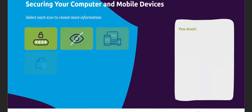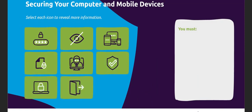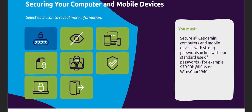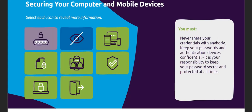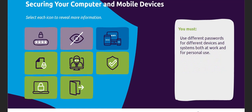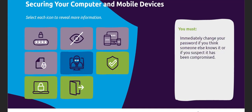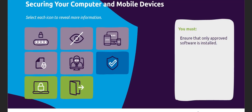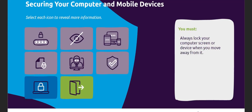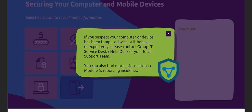One of the things you must do to keep your devices secure — select the icons to find out more. Protect devices with a strong password and keep your passwords secret. Use different passwords for different systems. Protect sensitive information with a strong password. Change your password if it has been compromised. Only install approved software. Lock your device when away from it and shut down your computer at the end of the day. If you think your device has been compromised, contact the group service desk, help desk, or your local support team straight away.